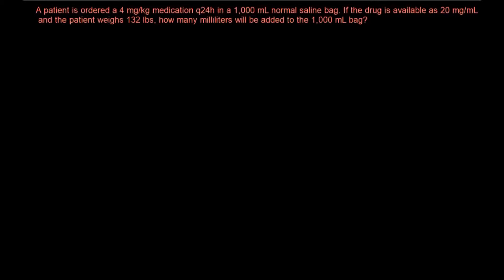Hello everyone and welcome to another dose calculation problem. In this particular question, a patient is ordered a 4 mg per kg medication every 24 hours in a 1000 ml normal saline bag. If the drug is available as 20 mg per ml and the patient weighs 132 lbs, how many ml will be added to the 1000 ml bag?